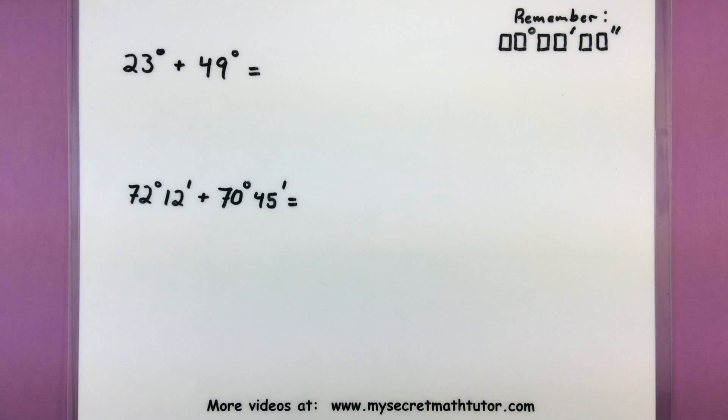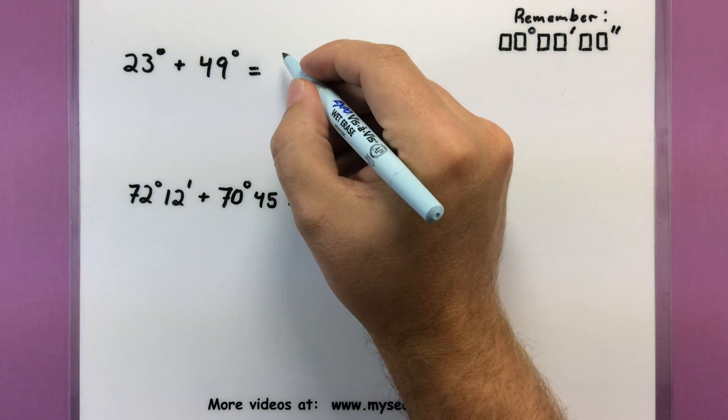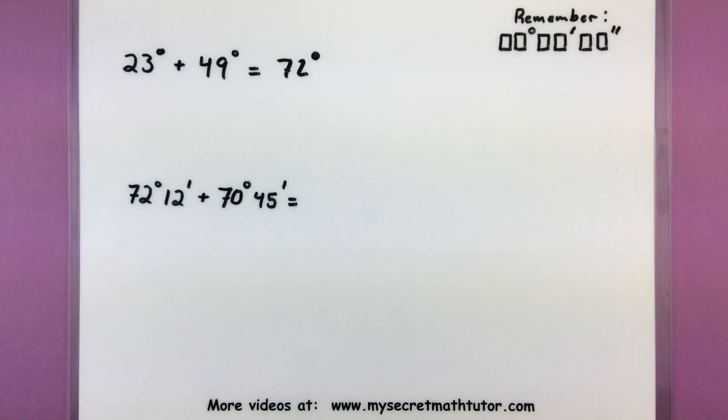So if I have just two regular angles and I'm adding them together, then you really want to think of this as simply adding numbers. So if I have an angle like 23 degrees plus an angle of 49 degrees, no tricks, no problems, we simply get a new angle of 72 degrees from adding the two previous.